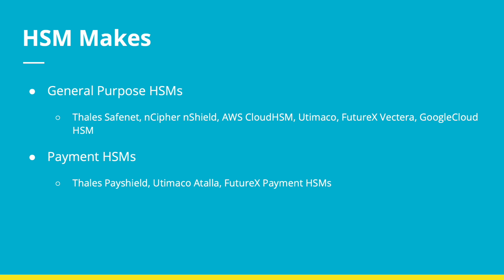Here are some important names of HSMs. For general purpose HSMs, there is Thales, SafeNet, nCipher, nShield, and cloud providers like AWS and Google also provide HSMs. For payment HSMs, there is the PayShield series, Atalla, and Futurex HSMs. This is not a full list — just a brief overview of HSMs available.